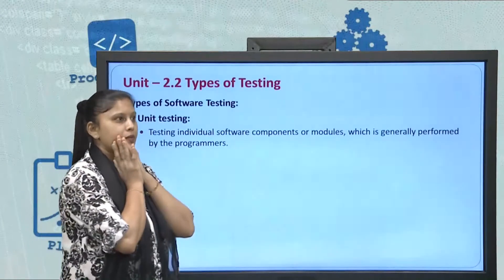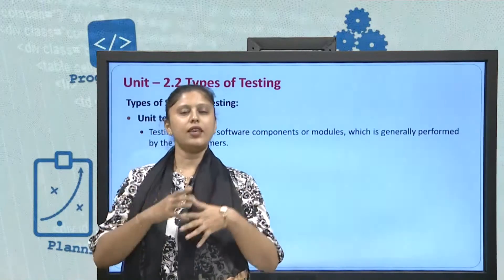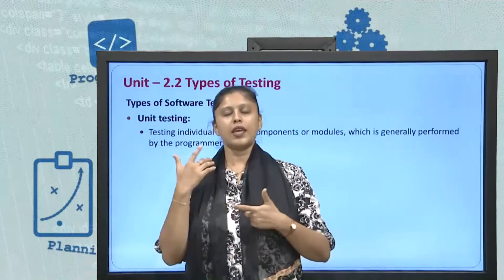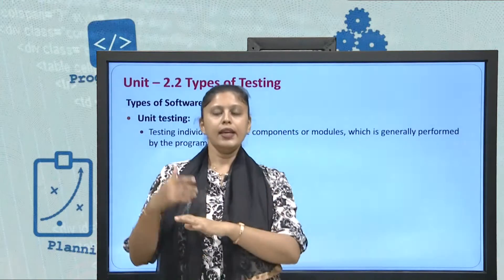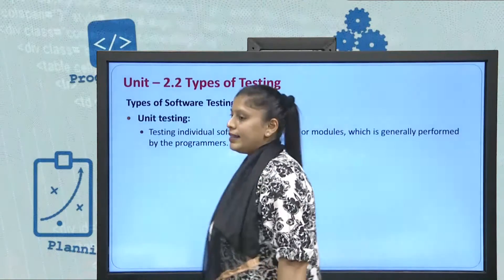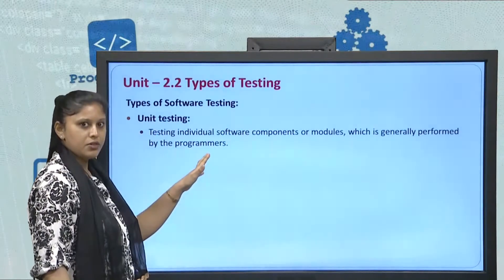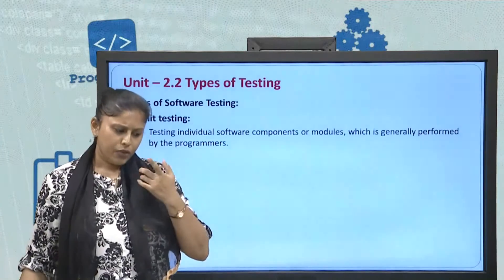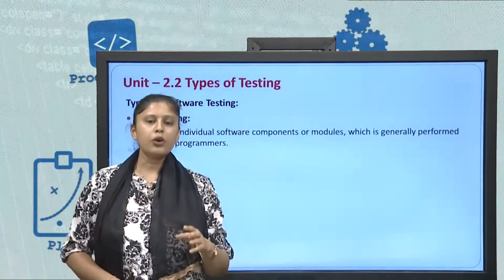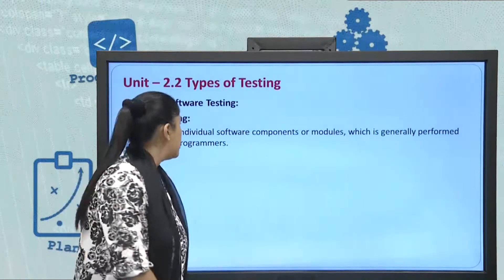Unit testing says that the entire code is always divided into modules. We have a big program which is divided into a number of modules, and these modules are our units. The testing done for each individual module is nothing but unit testing. It involves testing individual software components or modules, which is generally performed by the programmers. In companies, unit testing is always done by the developer who does the coding — checking the errors in those modules.